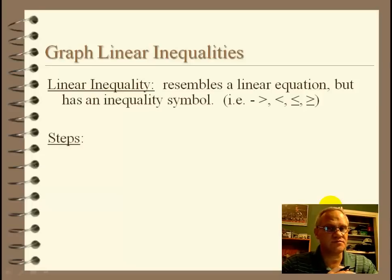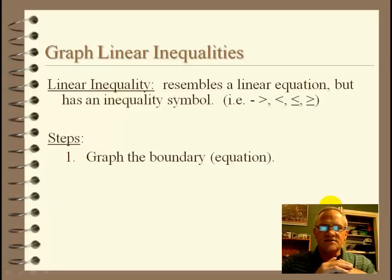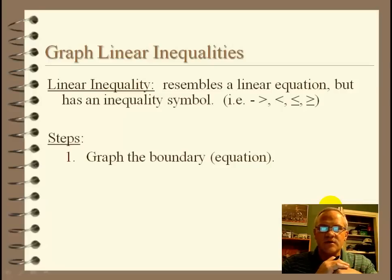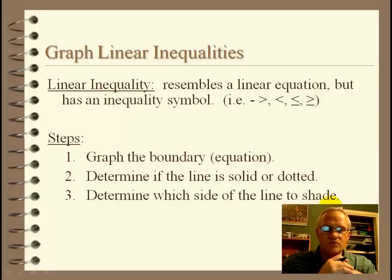Here are the steps for graphing linear inequalities. Number one, we're going to graph the boundary — that's the line, the part where it's equal to. Number two, we figure out if the line is solid or dotted. And then number three, we determine which side of the line we're going to shade. That's basically what we're going to do today.